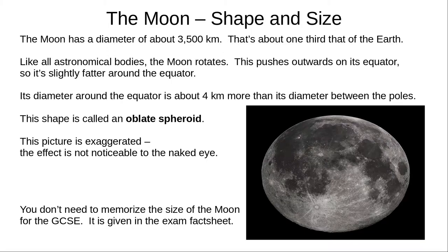The Moon is only about a third as large as the Earth with a diameter of about 3,500 kilometres. This figure is given on the GCSE fact sheet so you don't need to memorise it. The Moon rotates, just like all moons and planets. While gravity tries to pull it into a sphere, the centrifugal force outwards makes it bulge at the equator into a shape like a squished ball called an oblate spheroid. Its diameter at the equator is about 4 kilometres more than its diameter across the poles — not noticeable to the naked eye.